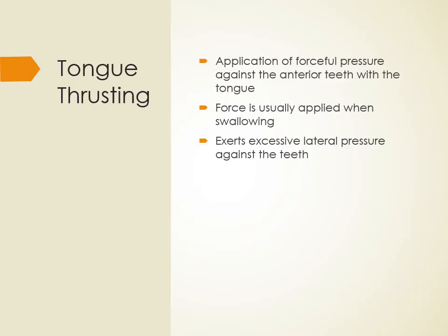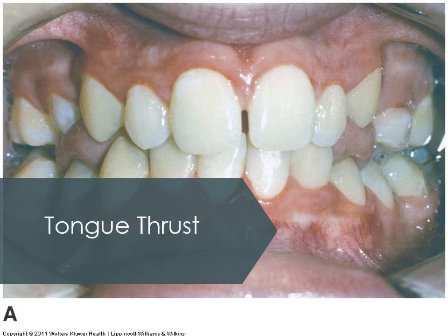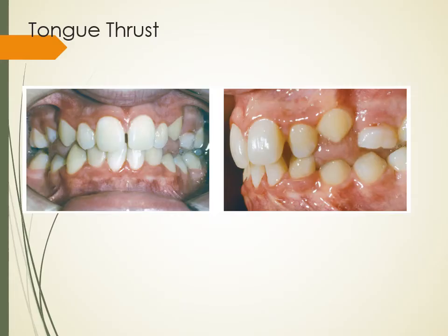Tongue thrusting is the application of forceful pressure against the anterior teeth with the tongue, usually applied when swallowing. Instead of the tongue being pushed up against the palate, it is pushed forward against the teeth. This exerts excessive lateral pressure against the anterior teeth and over time causes them to lean forward more widely than normal.